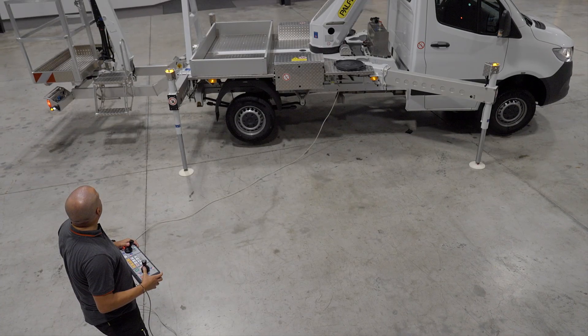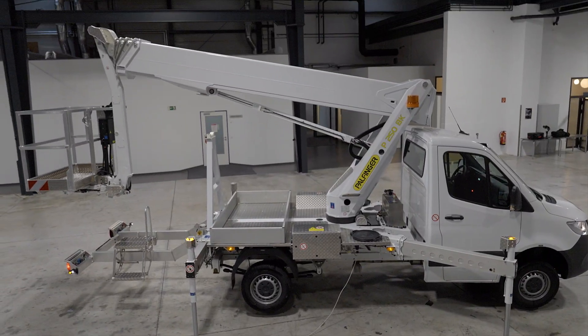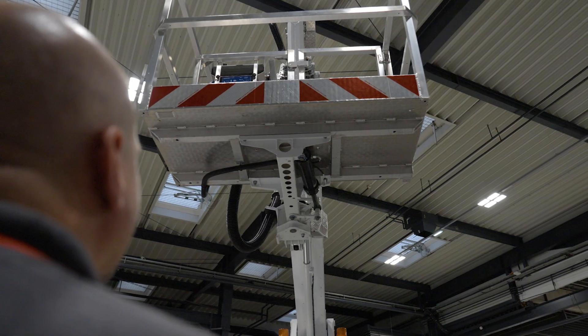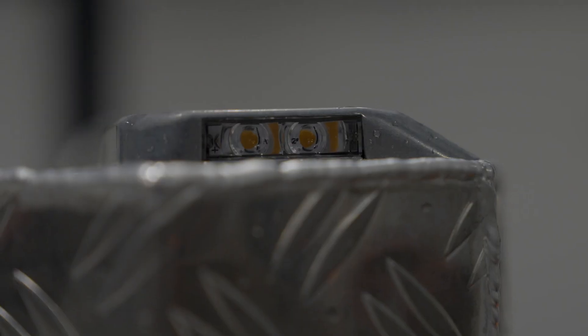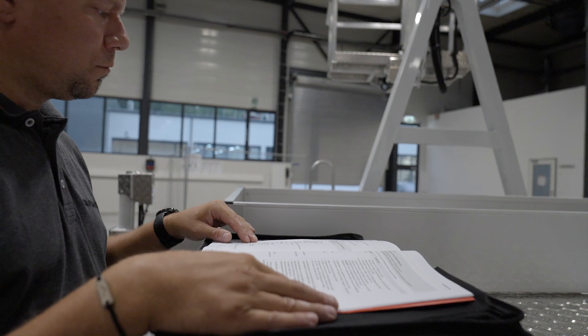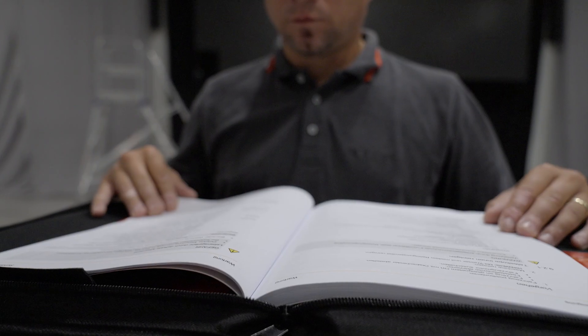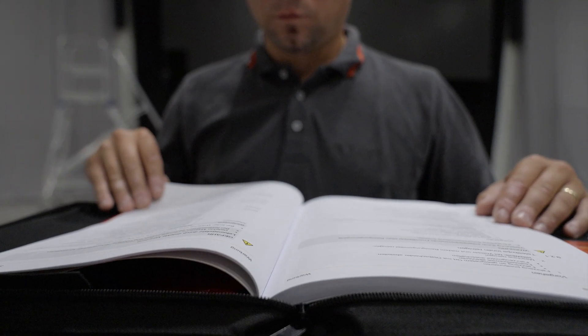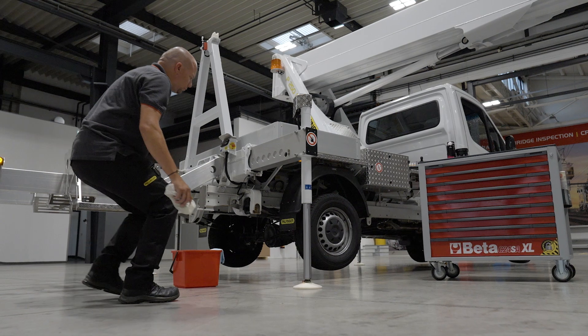Trouble-free operation of the machine can only be guaranteed if maintenance and service work is carried out regularly. The maintenance schedule provides information on the activities to be carried out regularly by the operator and the operating materials to be used.